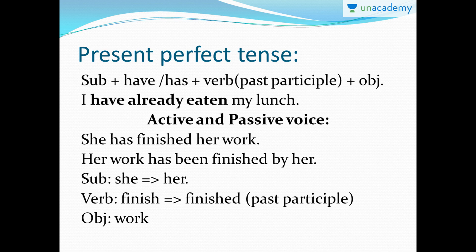If the verb is not in the past participle form, your entire sentence is incorrect. For example: 'I have already eaten my lunch.' 'Eat' is the verb, the past tense is 'ate,' and the past participle form is 'eaten.' 'Have' is the perfect word used to form present perfect tense here, so: 'I have already eaten my lunch' — 'lunch' is the object.